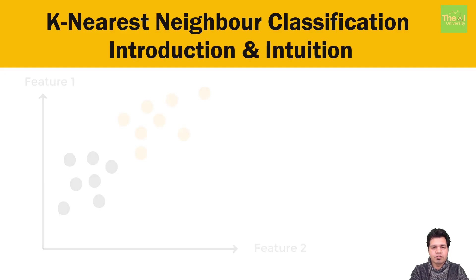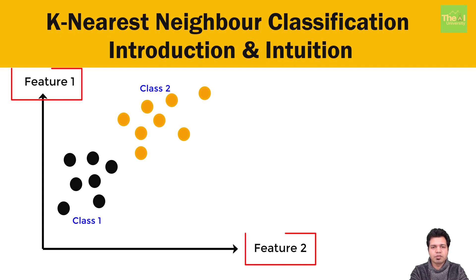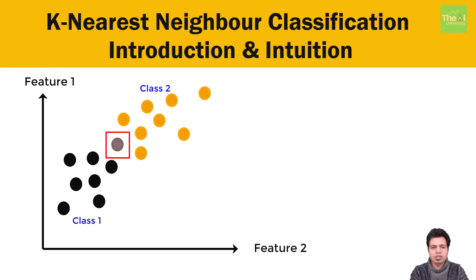Consider we have two classes or observations depicted by black and orange data points in two-dimensional space. Classes are categorized based on two features or variables called feature 1 and feature 2. Now let's say we encounter a new data point and our task is to classify it — that is, whether it belongs to the black class or the orange class. We will use the KNN algorithm to determine that, and here is the step-by-step approach we will take.